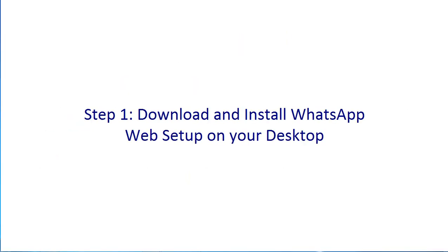Starting with Step 1 — download and install WhatsApp web setup on your desktop. The prerequisite for installing WhatsApp web setup is a 64-bit operating system with Windows 7 and above. If you have a 32-bit operating system, you need to update your Windows to the latest version and then you can install WhatsApp web setup.